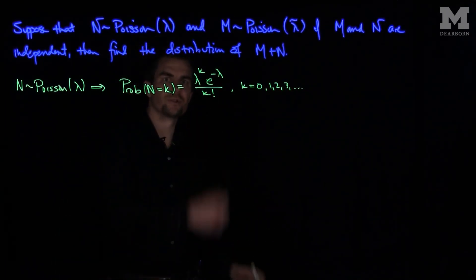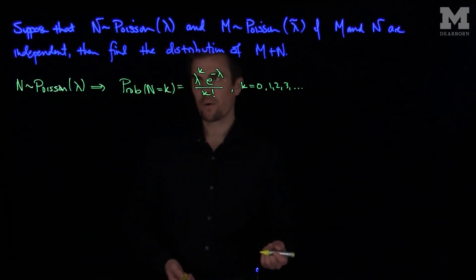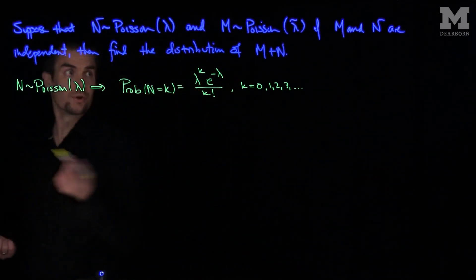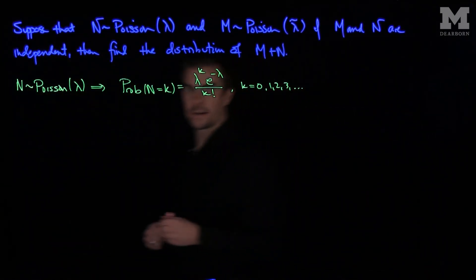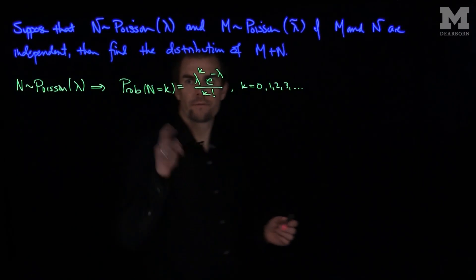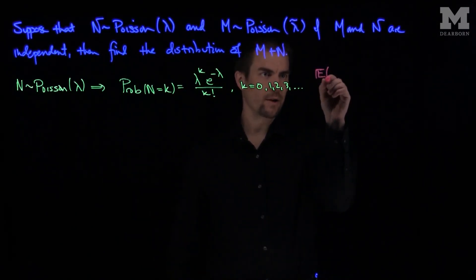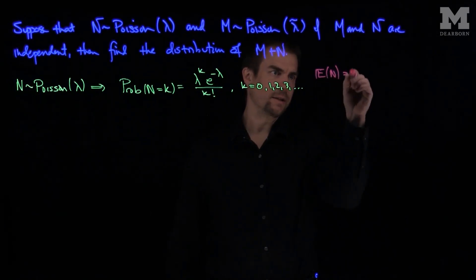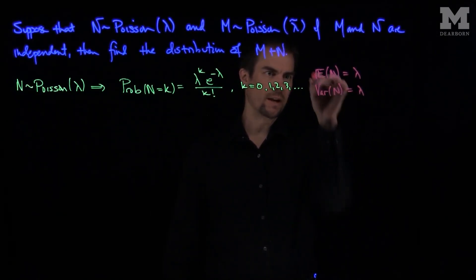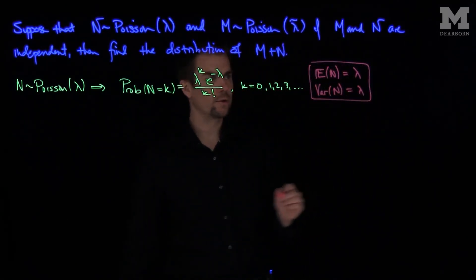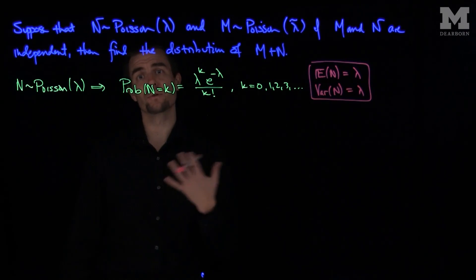A similar expression is true for m, except we replace lambda with lambda tilde. Now let's find the distribution of m plus n. We know for Poissons, the expected value of n is equal to lambda and the variance of n is also equal to lambda.